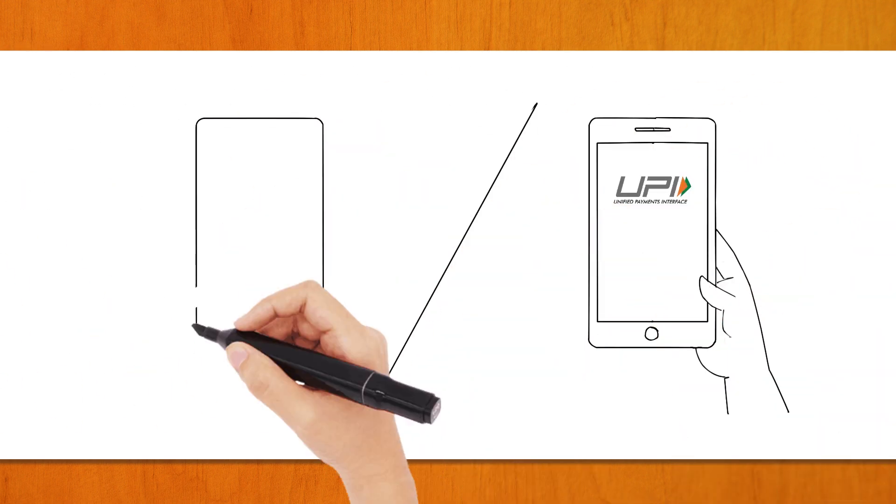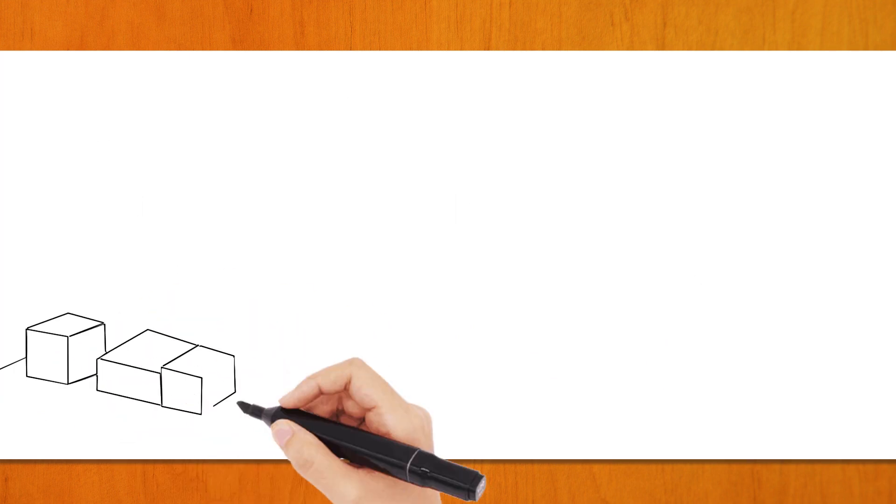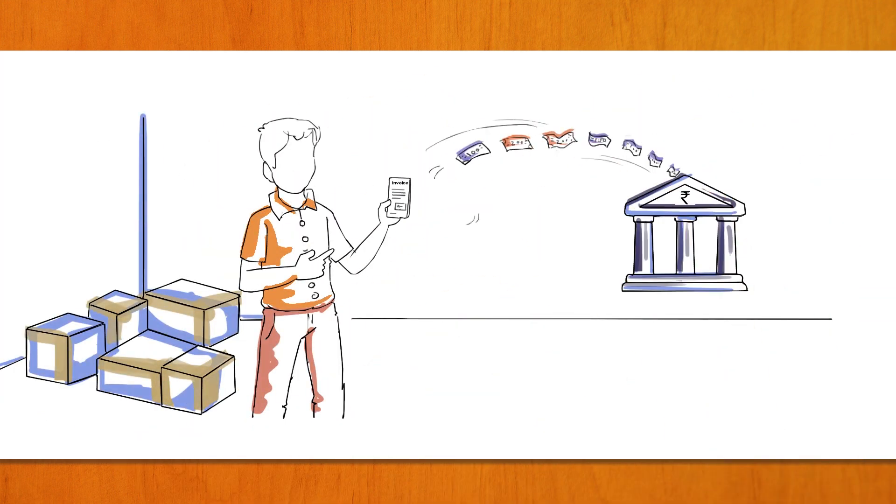Post receipt of the monies, the distributor sends the recharges to the retailer and this can be done on weekends as well as on holidays via UPI. And the distributor gets a transaction MIS report with the retailer UPI ID for the payment done.